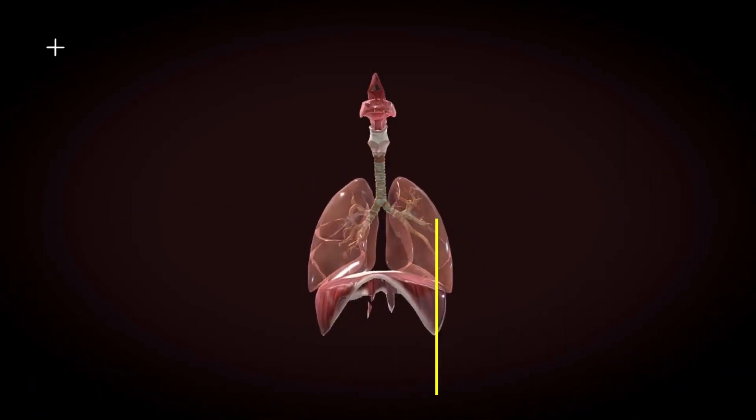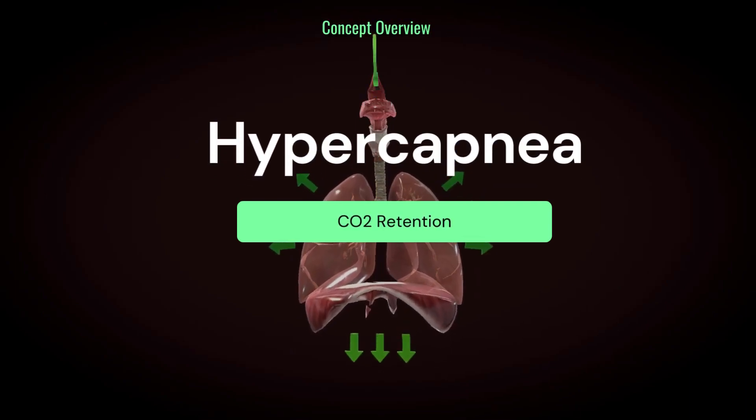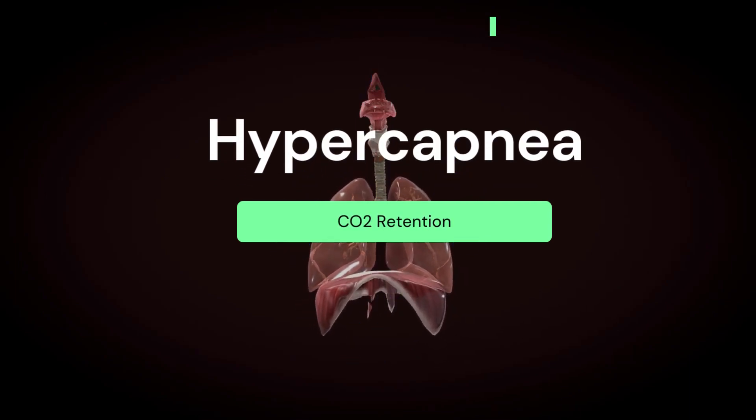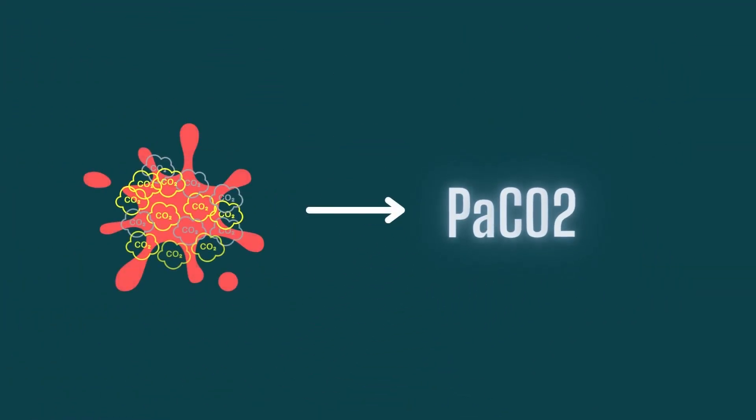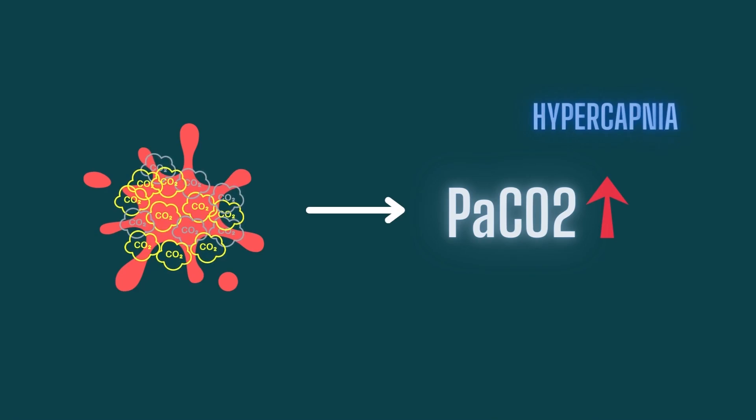For understanding CO2 narcosis, we need to understand hypercapnia. Hyper means excessive and capnia is derived from the Greek word capnos means smoke or carbon dioxide. Together, excessive amount of carbon dioxide in blood is called hypercapnia. The amount of CO2 dissolved in blood is called PaCO2 or partial pressure of carbon dioxide in blood. An increased level of PaCO2 in blood above normal is hypercapnia.